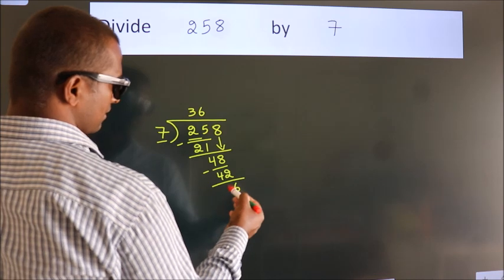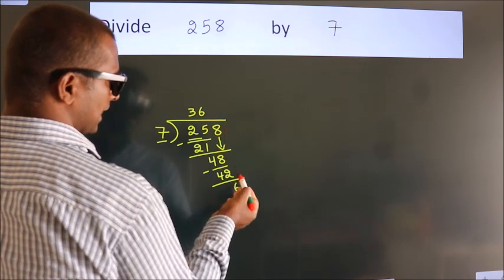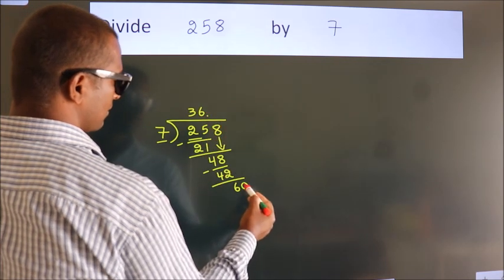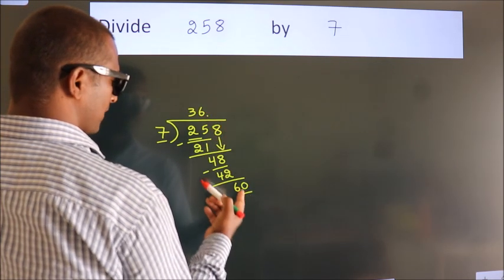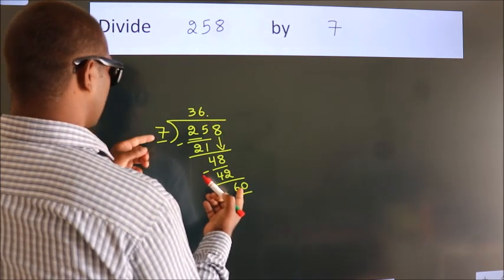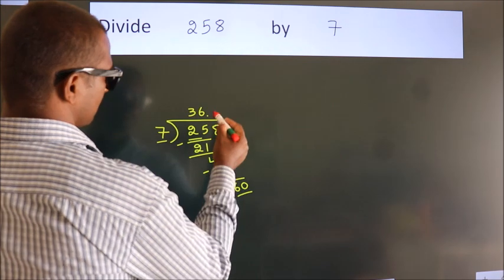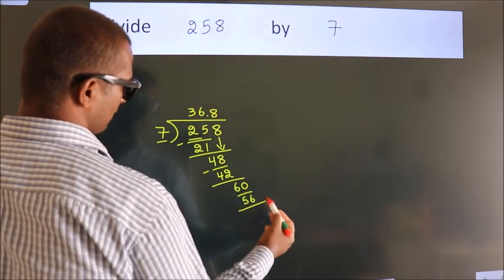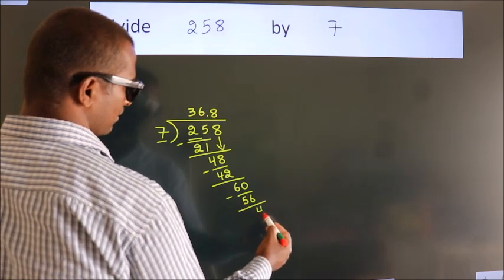After this, no more numbers to bring down. So what we do is we put a dot and take 0. So 60. A number close to 60 in the 7 table is 7 times 8, 56. Now we subtract. We get 4.